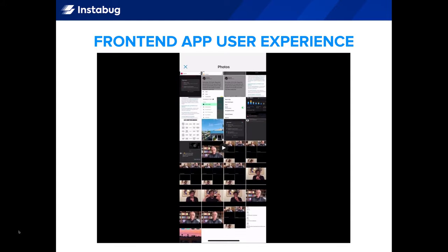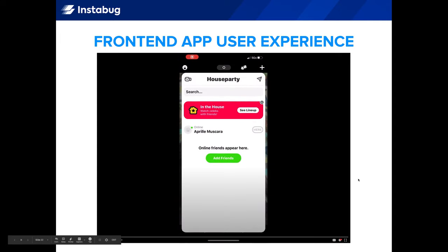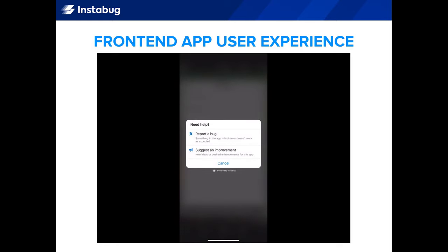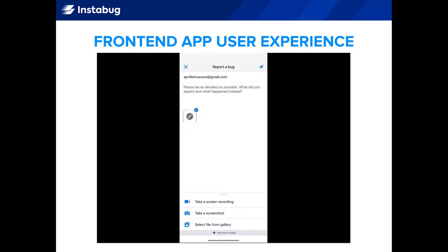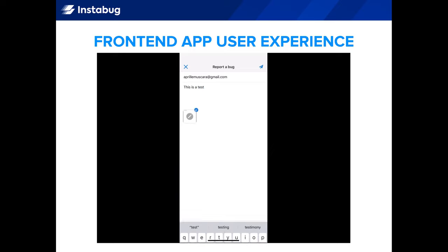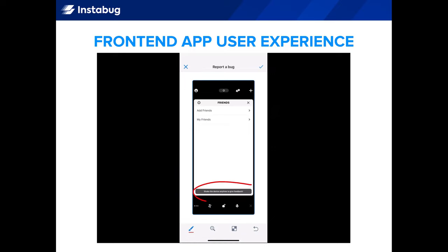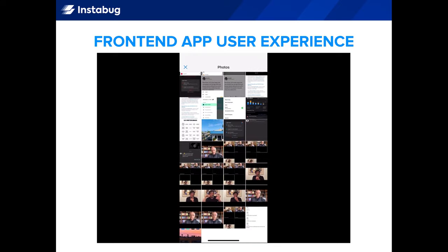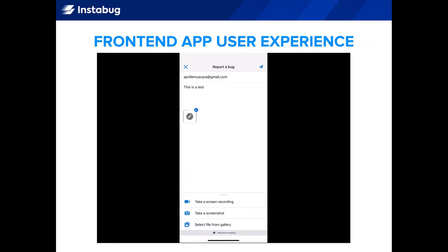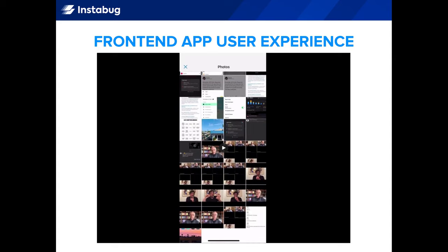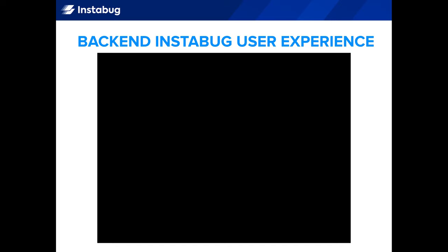Now let me show you what the experience is like for an end user, or a user of your app. This is an example from Houseparty, which currently uses Instabug in production. To give feedback, users can shake their phones and this modal appears. They tap Report a Bug and fill out the feedback form with their comment. A screenshot is automatically attached that they can annotate, or they can take a new screen recording or add a file from their library. They tap Send, and that's it. It only takes a shake of their phone and two taps for an app user to share their feedback — intuitive and seamless.